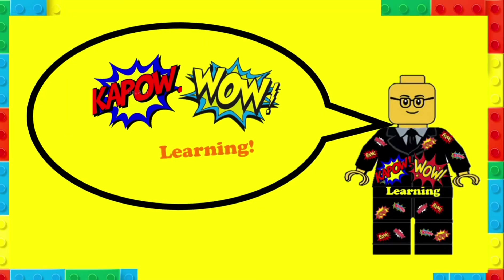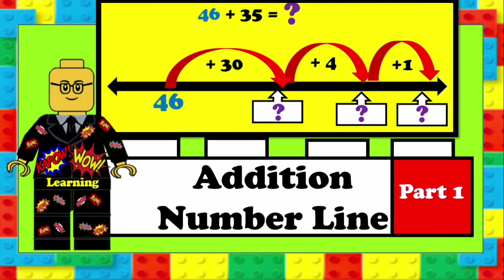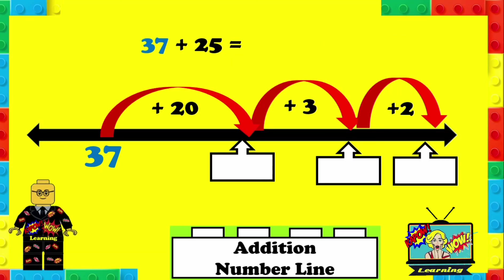Hi there and welcome to Kapow Wow Learning. Today we're going to be looking at addition number line, part one. Let's go! So, 37 plus 25.